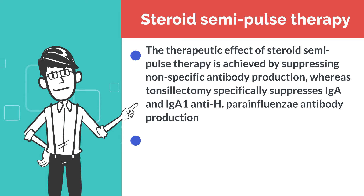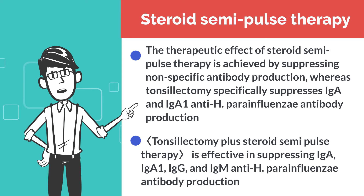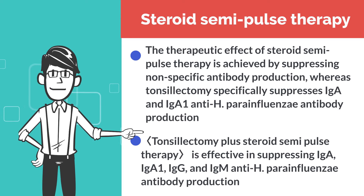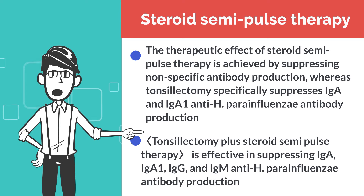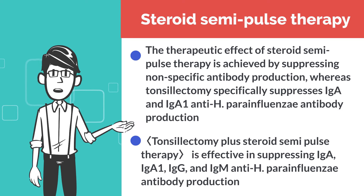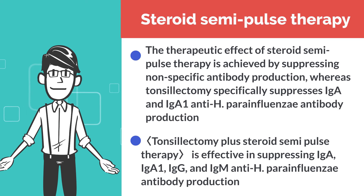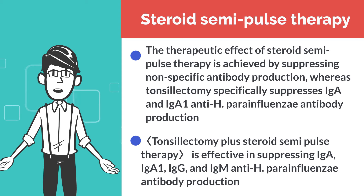Besides, tonsillectomy plus steroid semi-pulse therapy is effective in suppressing IgA, IgA1, IgG, and IgM anti-H. para-influenzae antibody production. The therapeutic effect of steroid semi-pulse therapy is achieved by suppressing non-specific antibody production, whereas tonsillectomy specifically suppresses IgA and IgA1 anti-H. para-influenzae antibody production. I hope you now understand the involvement of Haemophilius para-influenzae and that the treatment involves eliminating it and suppressing the excessive immune response.